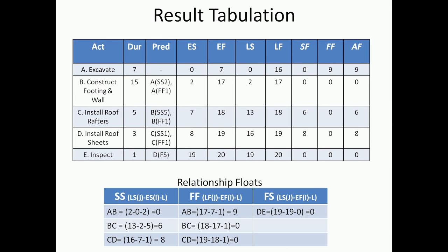One way of expressing all of these results is shown in a tabulation. We have activity, duration, predecessors, early start, early finish, late start, late finish, start float, finish float, and what we are calling total float or activity float. All of these values are listed and we have taken the relevant values from the network for early start, early finish, late start, late finish, and based on these we have calculated start float, finish float, and activity or total float. You should be able to check your calculations against this tabulation.